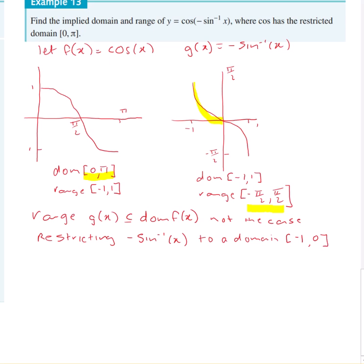So I've highlighted, that's the bit that's highlighted in yellow. Now, if we restrict that to a domain of negative 1 to 0, the range for negative inverse sine of x is now 0 to pi on 2.